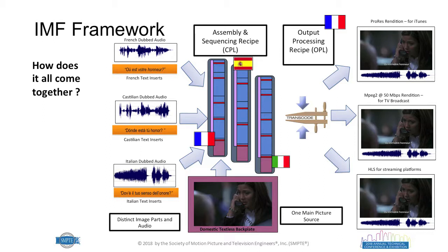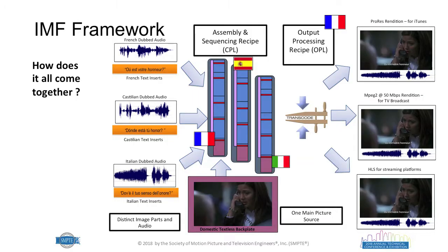Magically the Italian audio came back. For example, at the top there's ProRes — one transcode. In the middle, there's 50 megabit MPEG-2, which used to be common for broadcast. And at the bottom, there's HLS for streaming. So, coming from a single source — the picture at the bottom — with audio replacement tracks and inserts, the content can be transcoded into three or more different formats.